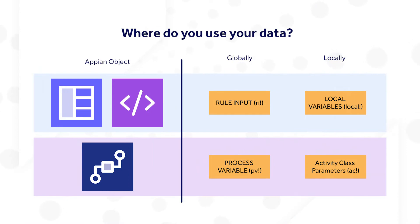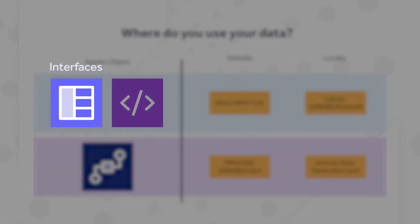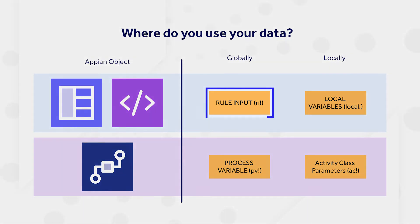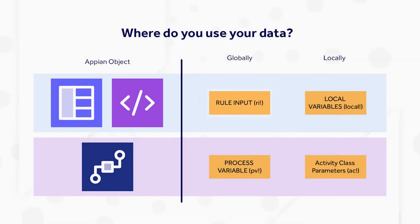Passing data between objects is critical to a properly functioning application. Rule inputs can be defined within interfaces and expression rules, and allow passing data into and out of the object. Similar to how functions and components have defined parameters, rule inputs become the parameters for expressions and interfaces. When calling an object in expression mode, you can even see the rule inputs and their types in the help text.